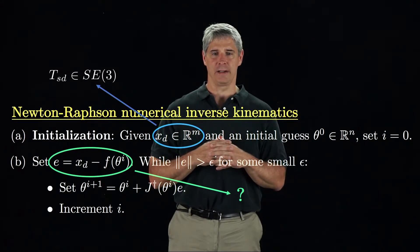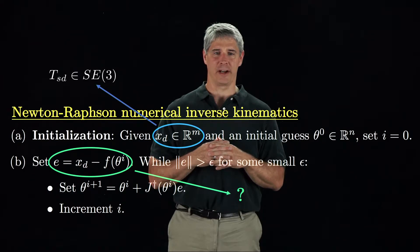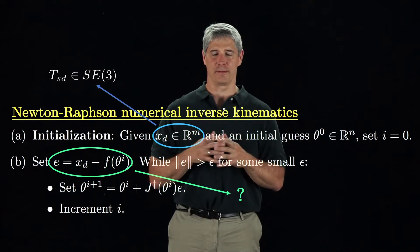For our modified algorithm, we need to find the twist that would take the end-effector of the B frame to the desired frame in unit time.